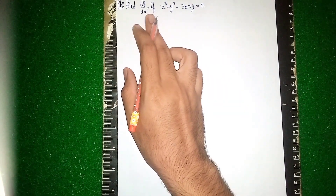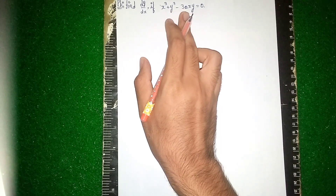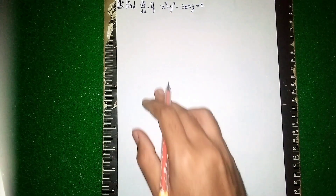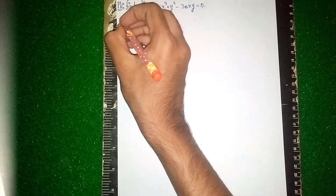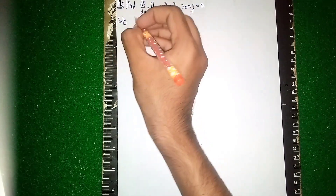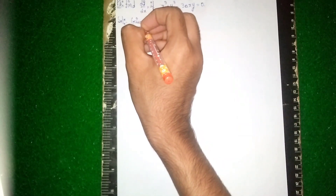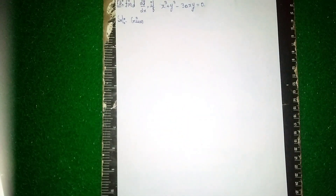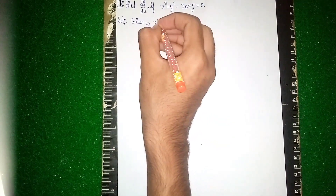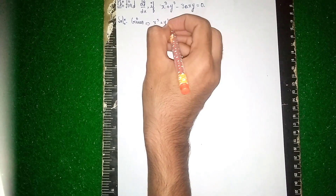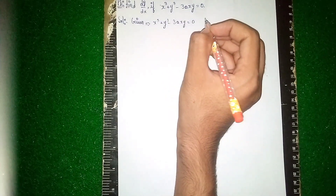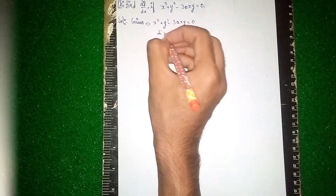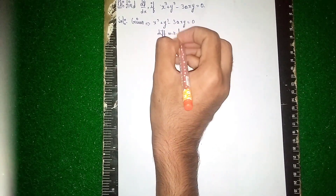Hello everyone, welcome back to my channel. Find dy/dx if x³ + y³ - 3axy = 0. This is a differentiation question. First, write 'Solution'. Given: x³ + y³ - 3axy = 0. Now differentiate with respect to x.